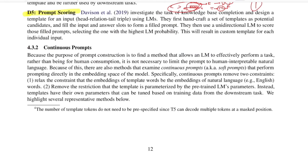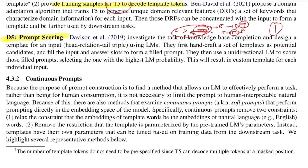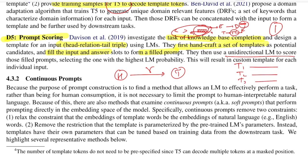The last discrete prompt method is prompt scoring. Davison et al. in 2019 looked at knowledge-base completion, typically represented as completing triples with a head node, tail node, and relation R. They first handcrafted a set of templates, filled them with actual inputs and answers to form filled prompts, and then used language models to score them via cross-entropy. The lower the loss, the better the filled prompt. For each individual input, a set of templates is ranked by language modeling score and the best-performing one is selected.